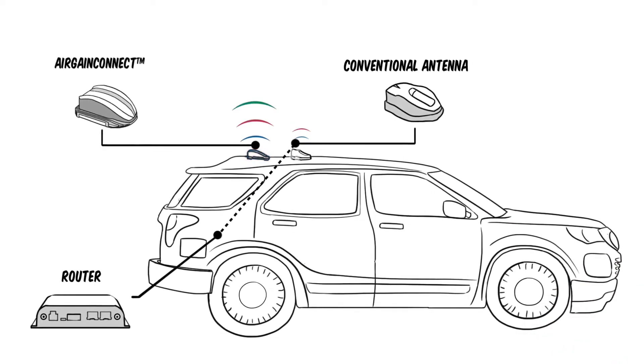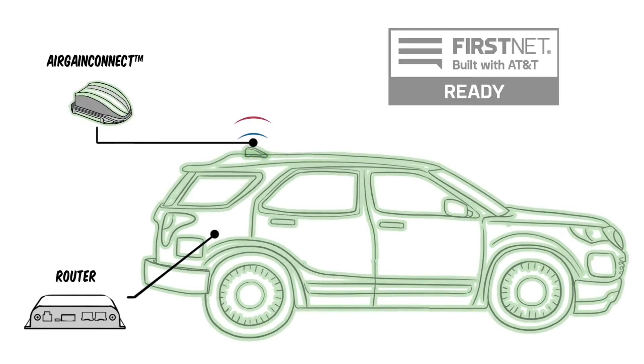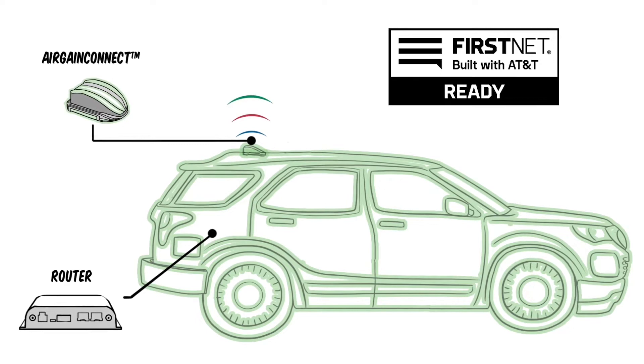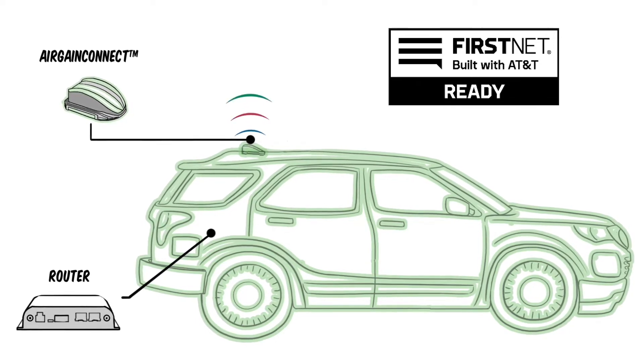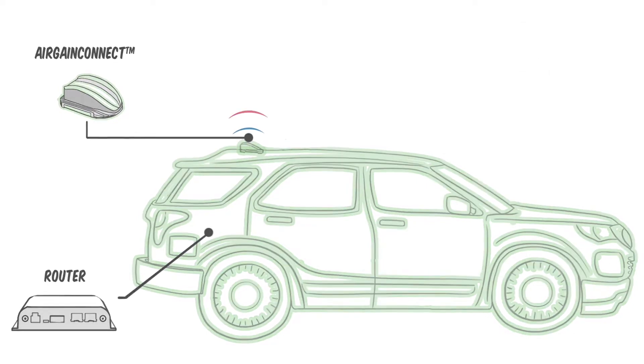AirGain Connect is AirGain's first integrated HPUE modem and antenna that eliminates loss over the coax cable from the vehicle roof to the router in the trunk. The patented design provides up to two times greater cellular coverage than routers with integrated Band 14 LTE modems.